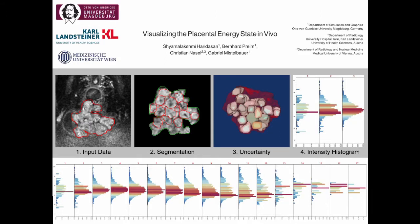In this poster we visualize the placental energy state in vivo. Functional regions in the human placenta maintain the exchange of hormones, oxygen and nutrition with the fetus. Partial infarcts, thrombosis or hemorrhage within the placenta affect these regions.